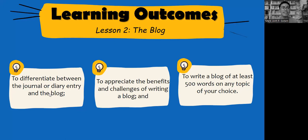The learning outcomes of Lesson 2 are: first, to differentiate between a journal or diary entry and the blog; second, to appreciate the benefits and challenges of writing a blog; and third, to write a blog of at least 500 words on any topic of your choice.